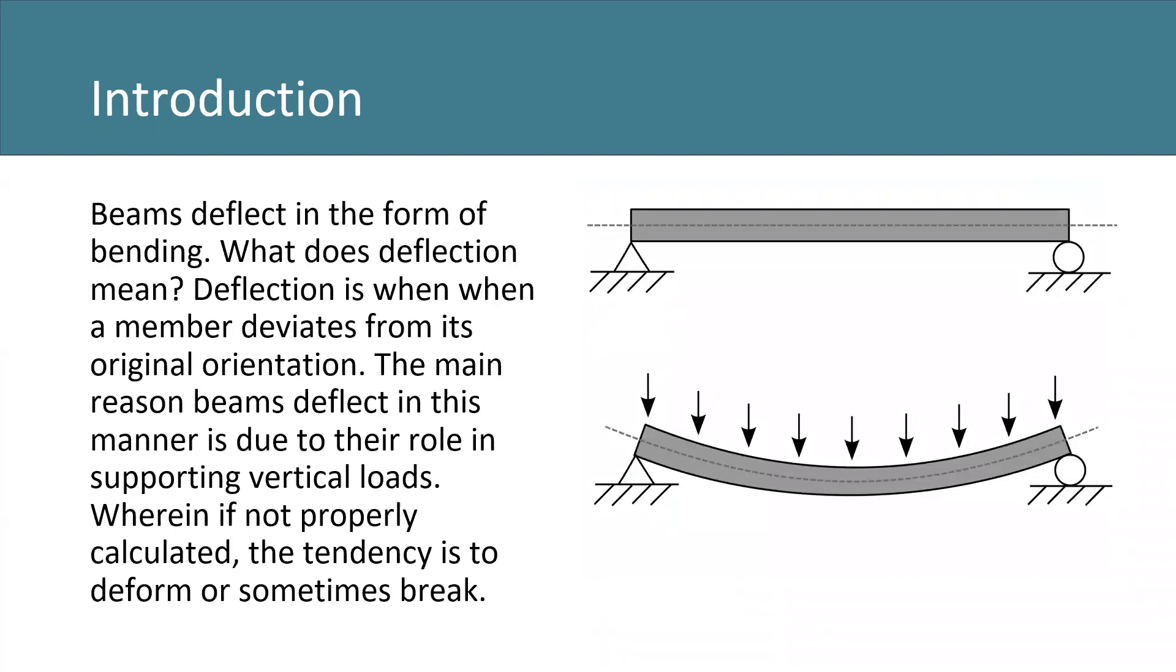Beams deflect in the form of bending, but what does deflection mean? Deflection is when a member deviates from its original orientation. The main reason beams deflect in this manner is due to their role in supporting vertical loads, wherein if not properly calculated, the tendency is to deform or sometimes break.